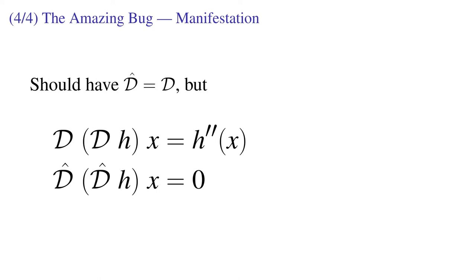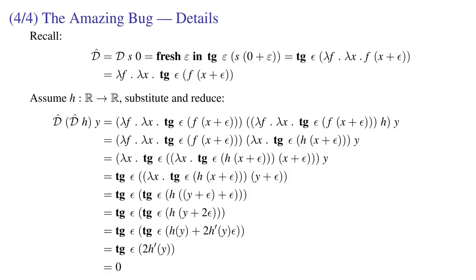But if we use them in a nested fashion, d is operating correctly on a scalar function h, takes a second derivative. But d hat gives us a constant function zero when used in this nested fashion.